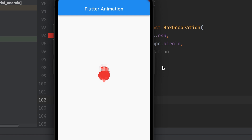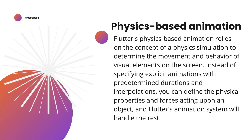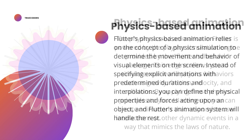Flutter's physics-based animation relies on the concept of a physics simulation to determine the movement and behavior of visual elements on the screen. Instead of specifying explicit animations with predetermined durations and interpolations, you can define the physical properties and forces acting upon an object, and Flutter's animation system will handle the rest.